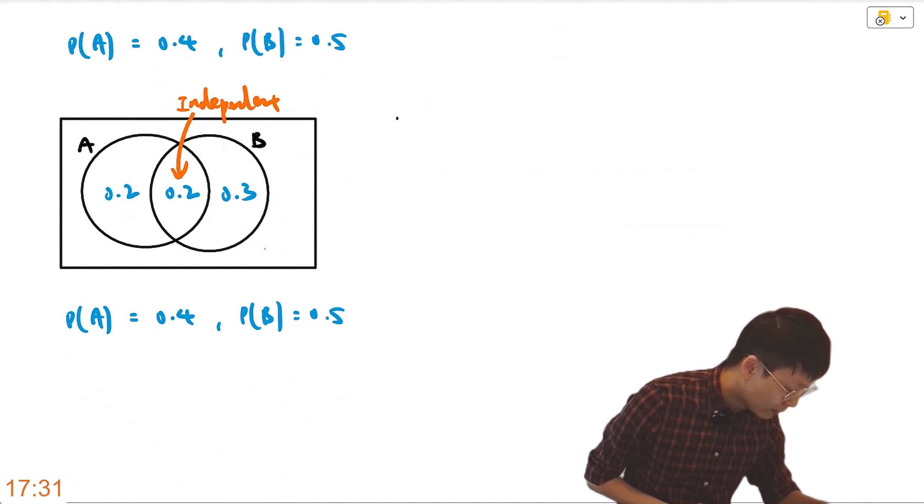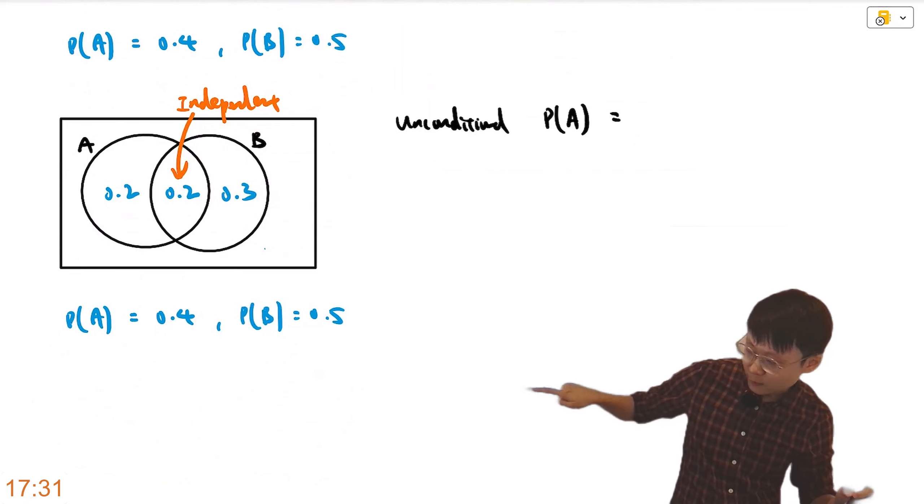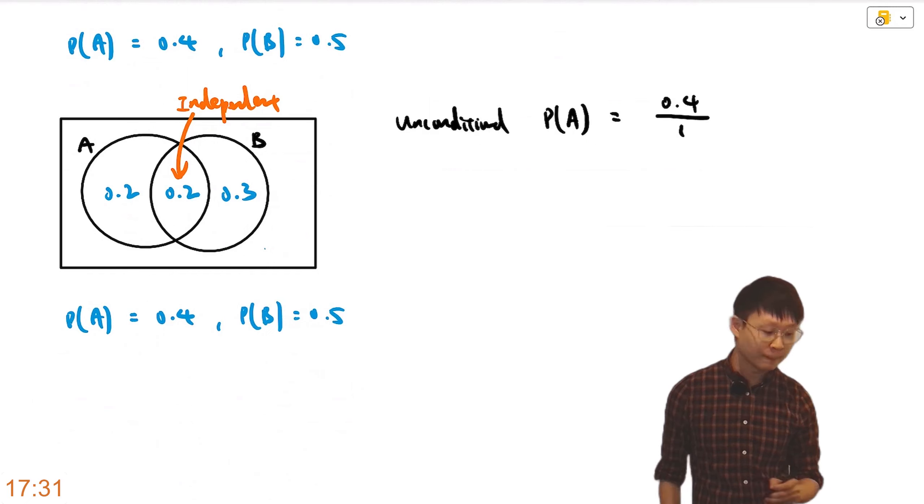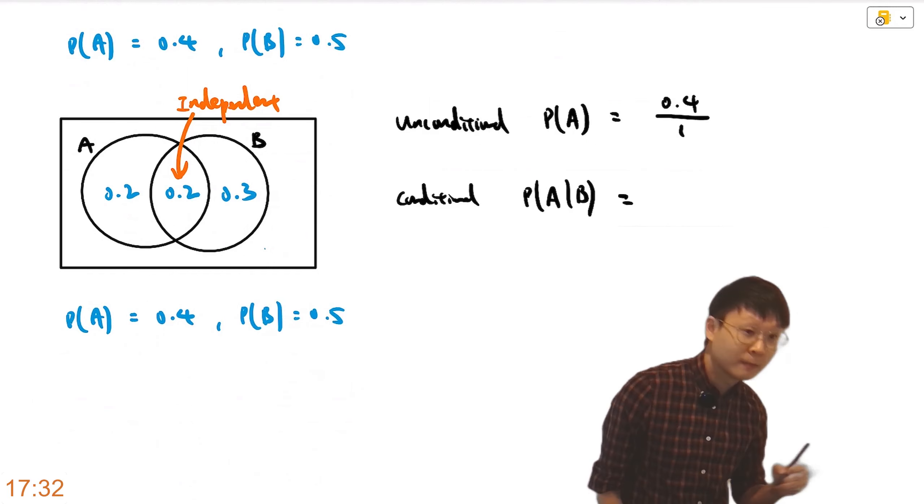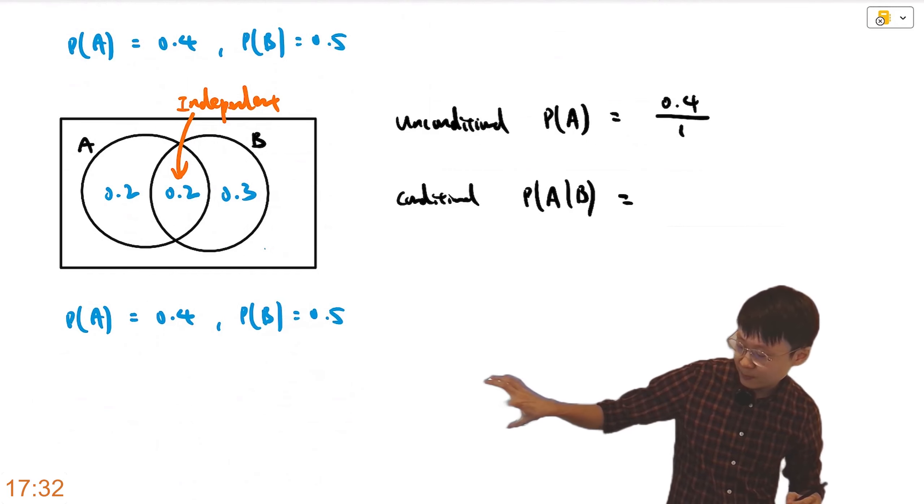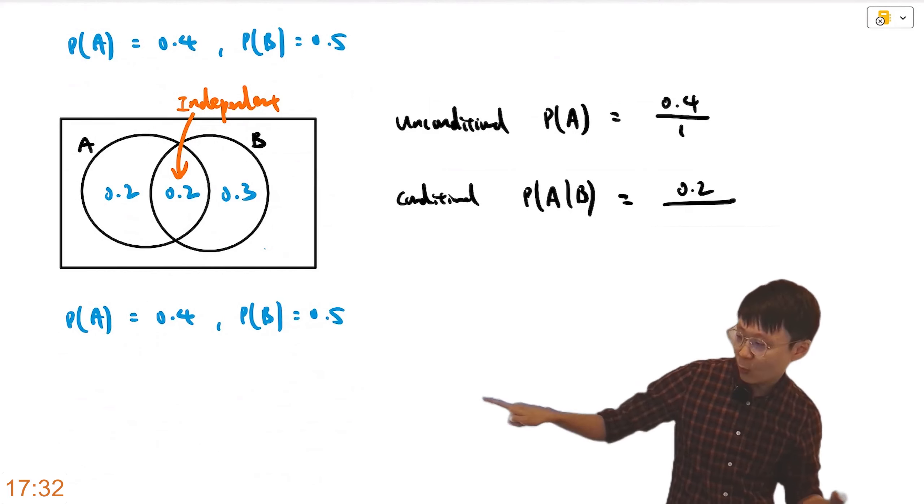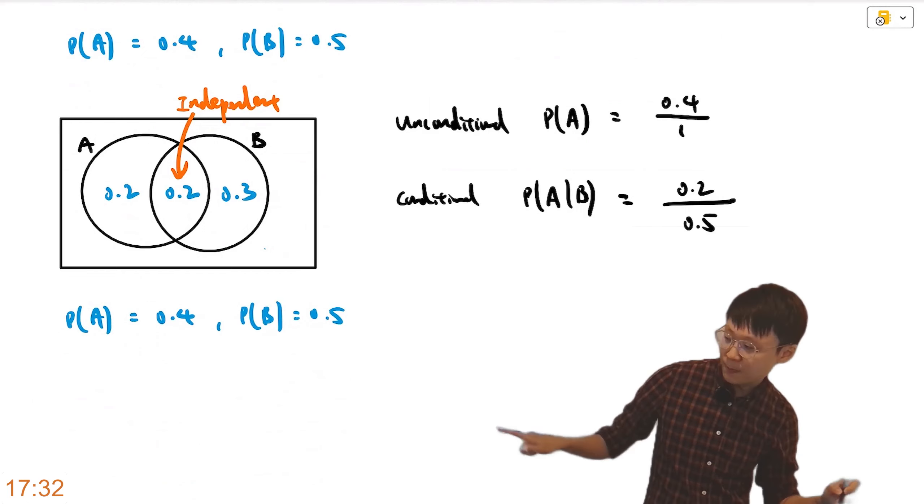If you recall, unconditional P(A), the total of A, so it would be 0.4 divided by 100%. That's how you should think about unconditional. A, conditional B. Zoom into the universe of B. Forget about everything else. There's only 0.2 chance of A happening within the universe of B divided by how large B is, 0.5.